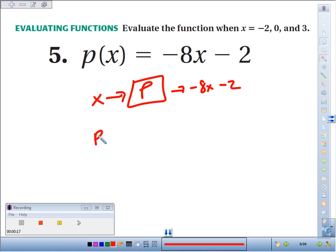So we'd start off by saying p of negative 2, or the function value at negative 2, we have to multiply it by negative 8, so negative 8 times negative 2 is 16, minus 2 makes 14.